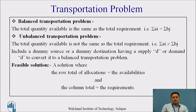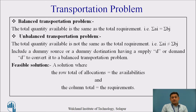Before solving the transportation problem, we should confirm whether it is a balanced or unbalanced transportation problem. A balanced transportation problem is one where the total quantity available equals the total requirement. If unbalanced, we add a dummy source or dummy destination — a dummy row or column — to convert it to a balanced problem. A feasible solution is one where the row totals of allocation equal availabilities and column totals equal requirements.